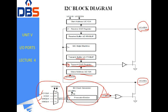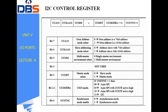The I²C state machine shows the status of the registers. We have a receiver buffer register and a receiver shift register. There is also an own address register which is predefined, along with an enable signal.